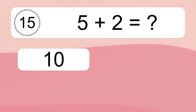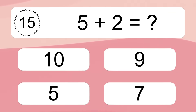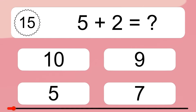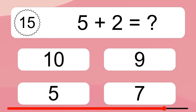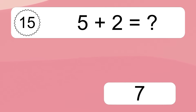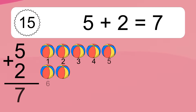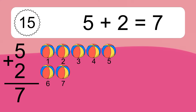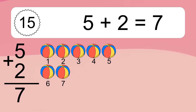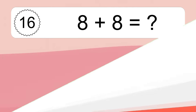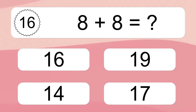5 plus 2 equals what? 5 plus 2 equals 7. Let's count it: 1, 2, 3, 4, 5, 6, 7.